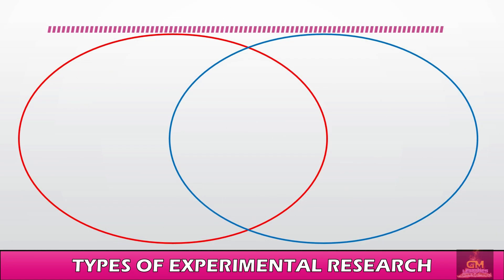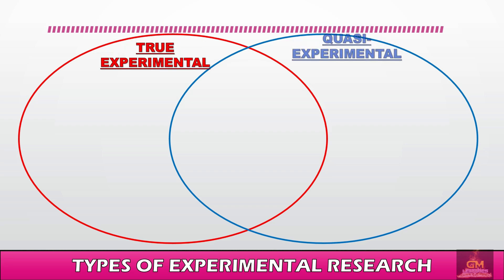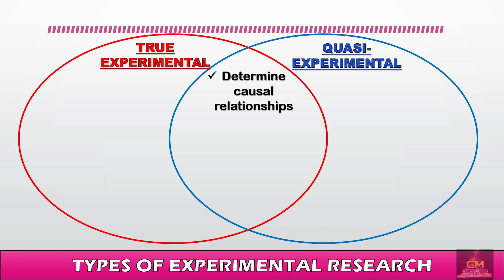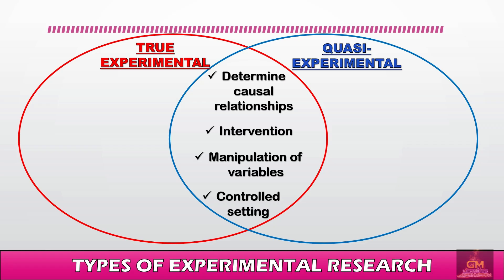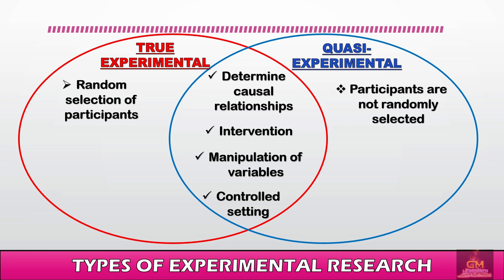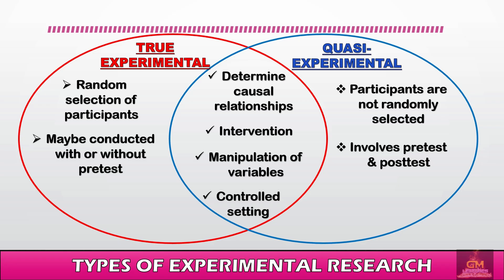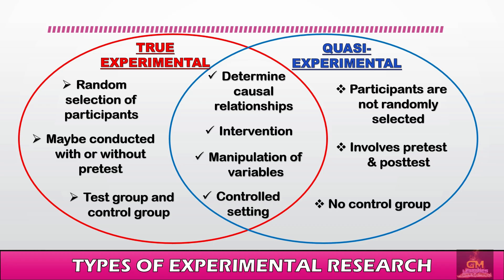Before proceeding, let's recap the similarities and differences between true experimental and quasi-experimental research. Both determine causal relationships, involve intervention, include variable manipulation, and are conducted in a controlled setting. In terms of differences: true experimental research uses random selection of participants, whereas quasi-experimental does not. True experimental research may be conducted with or without a pre-test, while quasi-experimental always involves pre-test and post-test. Finally, true experimental research involves a test group and a control group, while quasi-experimental research does not have a control group.